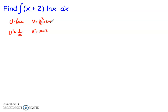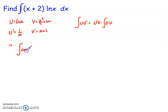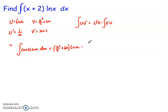I then use the standard integration by parts formula: the integral of u·v-dashed equals u·v minus the integral of u-dashed·v. So the integral of (x + 2)·ln(x) dx equals (x²/2 + 2x)·ln(x), take away the integral of (x²/2 + 2x) times (1/x). Every term gets multiplied by 1/x, allowing us to cancel powers of x, and we end up with the integral of (½x + 2) dx.